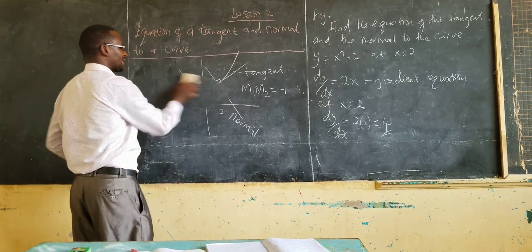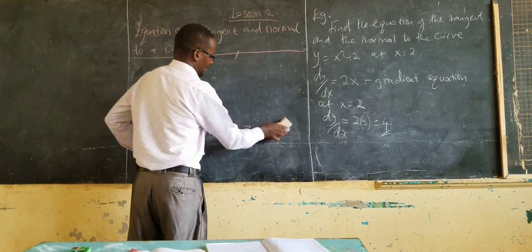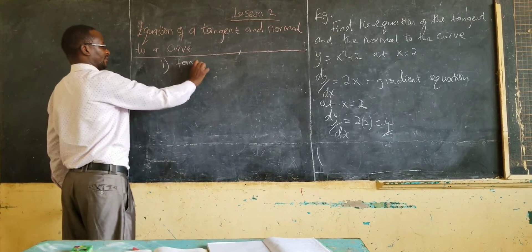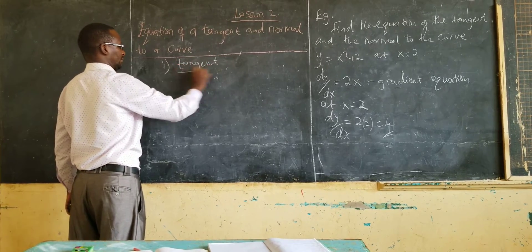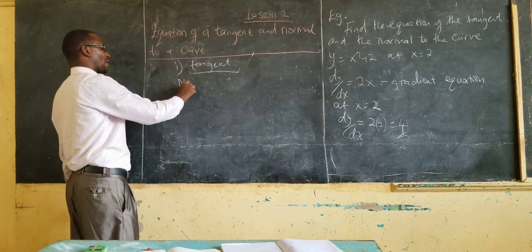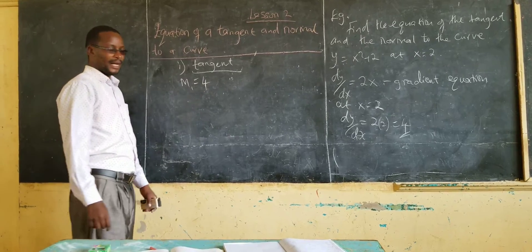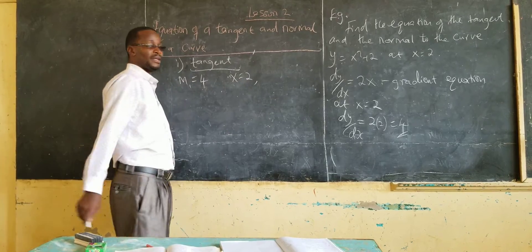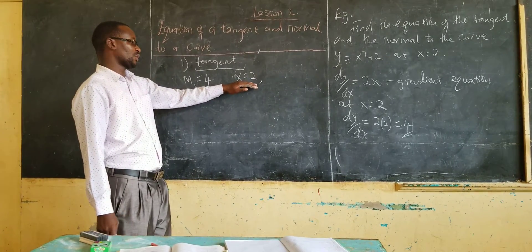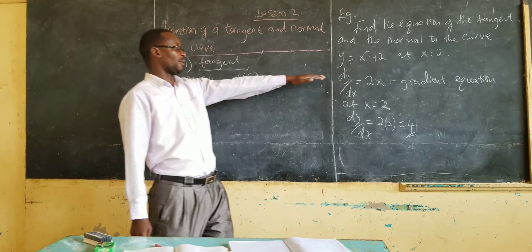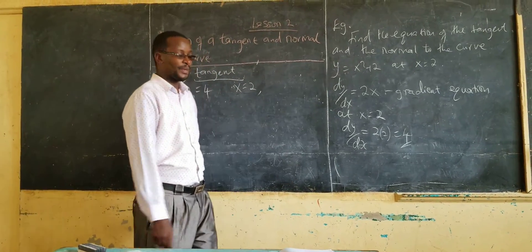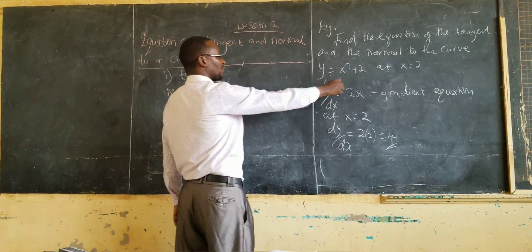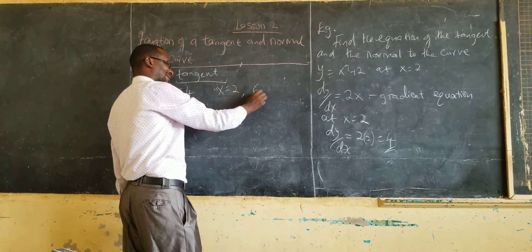So, then we go ahead and get the equation of the tangent. The gradient of the tangent, m1, is 4, and it passes through the point where x equal to 2. So, if x equal to 2, we need the value for y. We substitute x equal to 2 into the original equation and we get 4 plus 2, which is 6.